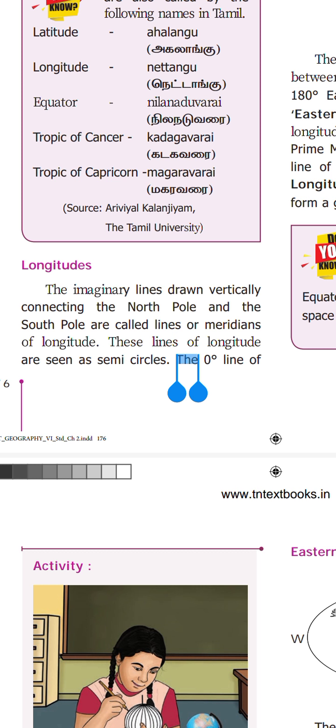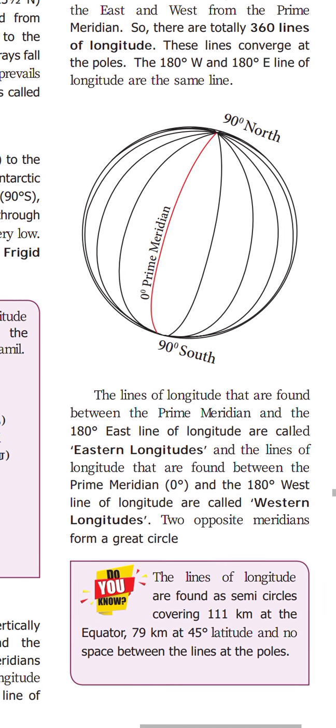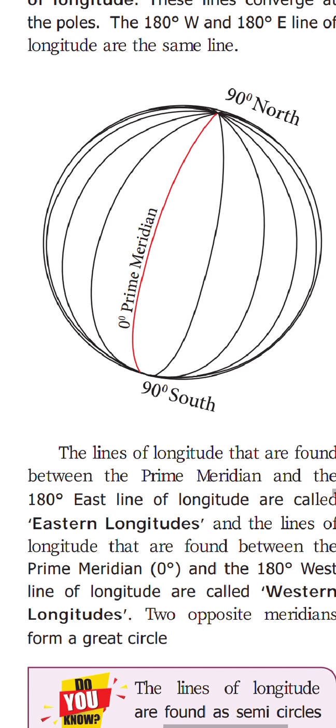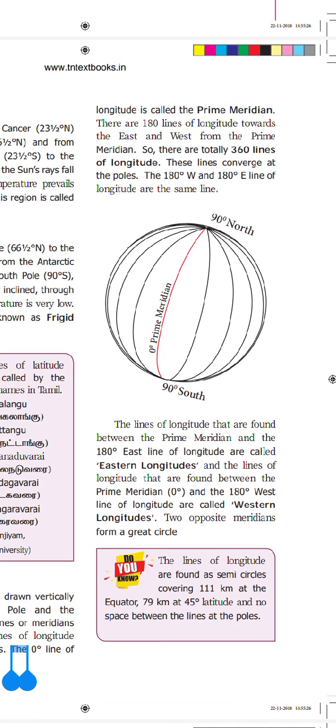What does longitude mean? Imaginary lines drawn vertically connecting the north pole and the south pole are called lines or meridians of longitude. If you draw a line vertically from north pole to south pole — this is north pole, this is south pole — that vertical line is called a longitude.